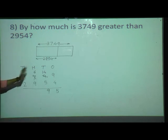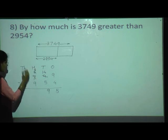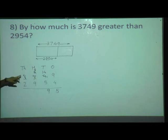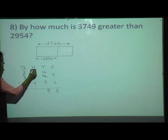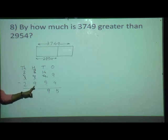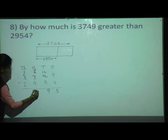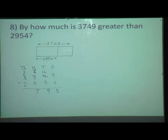Then go to the hundreds place. Here 6 is there, and here 9 is there. Again the same problem — 6 minus 9, we can't do it because 6 is smaller than 9. So just cut this 6 and write as it is, then go to the neighbor. The neighbor is having 3, so take 1 borrow from this 3. 3 minus 1 equals 2 — so 2 will remain at the thousands place. And here at the hundreds place, 6 becomes 16. Now 16 minus 9: count your fingers after 9 till 16. 16 minus 9 is equal to 7. Write 7 at the hundreds place.